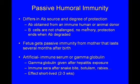Passive humoral immunity differs in the antibody source and degree of protection. Here, antibodies are obtained from an immune human or animal donor — the B cells are not challenged. You never got the virus; you were given antibodies but never exposed to it, so there's no memory and no lasting protection. Once the antibodies leave, you're done. This is how fetuses get passive immunity from the mother, lasting several months after birth. Artificial immune serum or gamma globulin are given after hepatitis exposures, immune serum after snake bites, botulism, and rabies. The effects are short-lived — two to three weeks — and once the antibodies go away, so does the immunity.